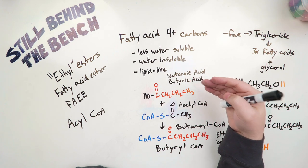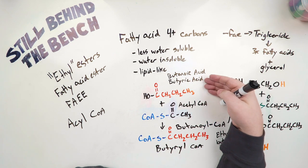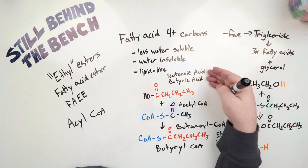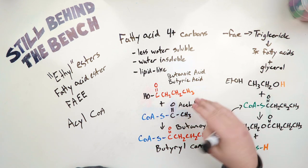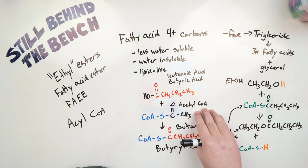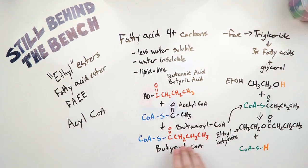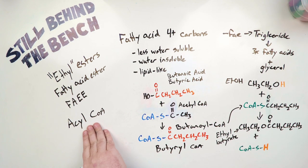So in this case of fatty acid ester synthesis, the first step is that the fatty acid, in this case I'm going to use butyric acid, otherwise known as butanoic acid, gets combined with an acetyl coenzyme A molecule, and that turns it into what's called an acyl coenzyme A.